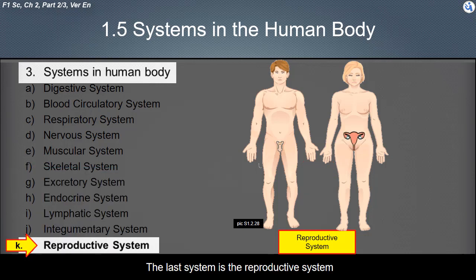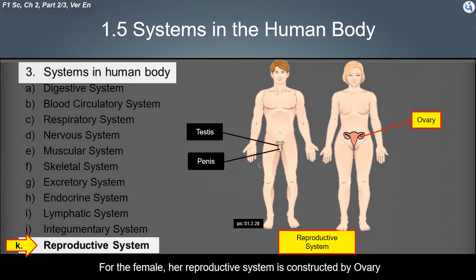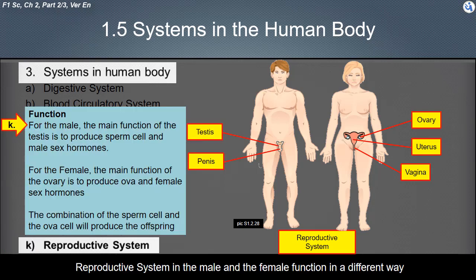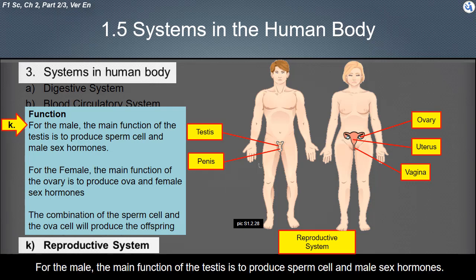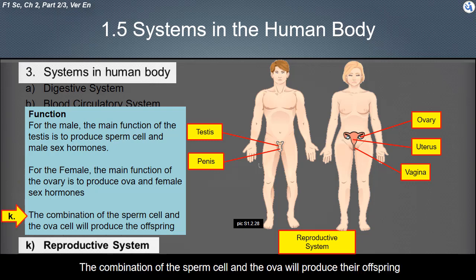The last system is the reproductive system. The reproductive systems for male and female are different. For the male, it is constructed by the testis and penis. For the female, the reproductive system is constructed by the ovary, uterus, and vagina. The main function of the testis is to produce sperm cells and male sex hormones. The main function of the ovary is to produce ova and female sex hormones. The combination of the sperm cell and the ova will produce their offspring.